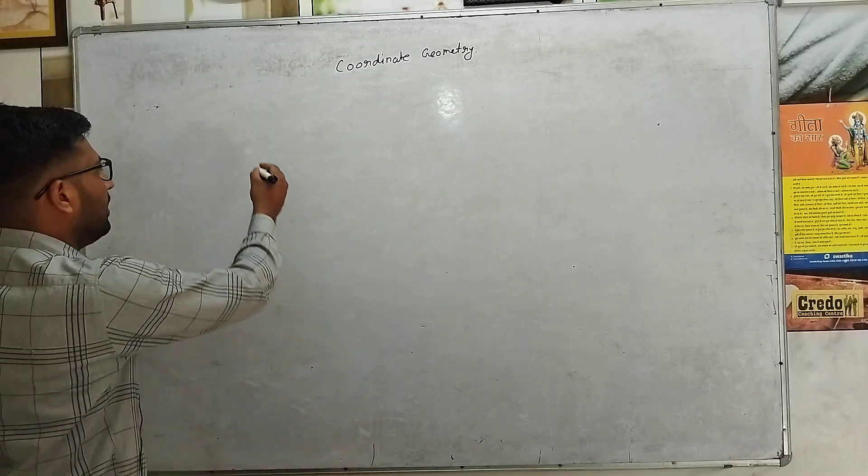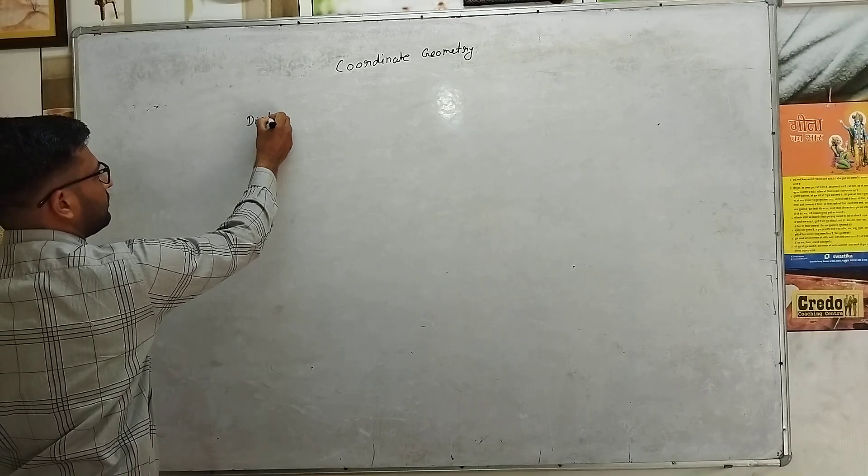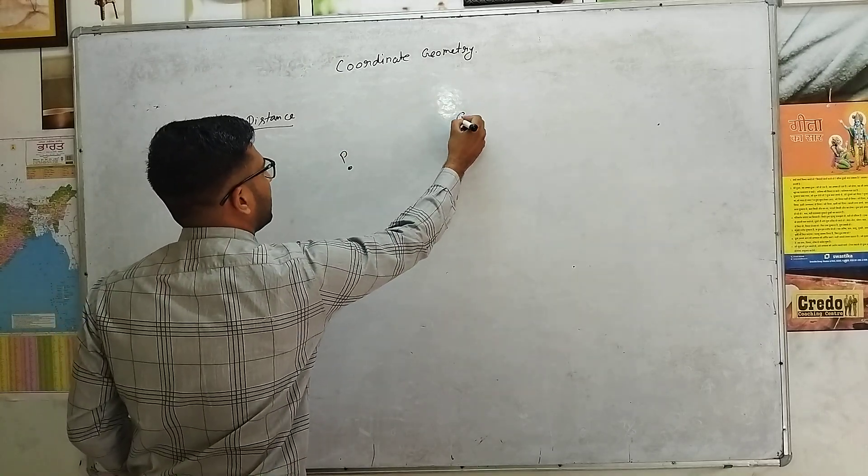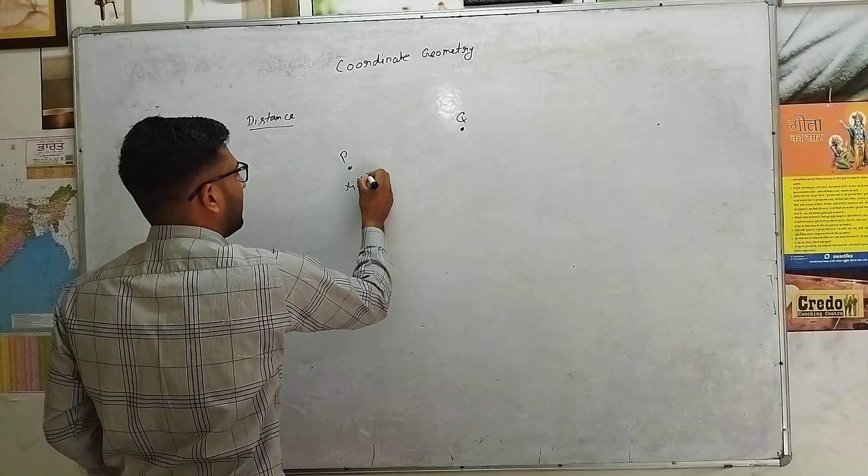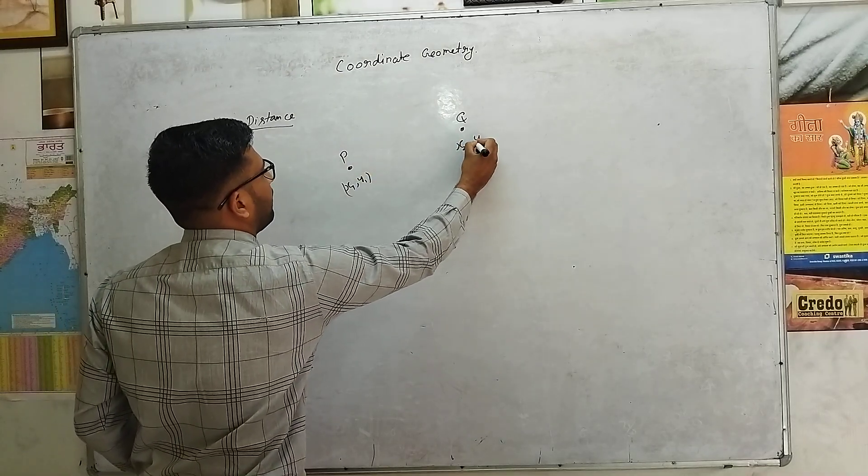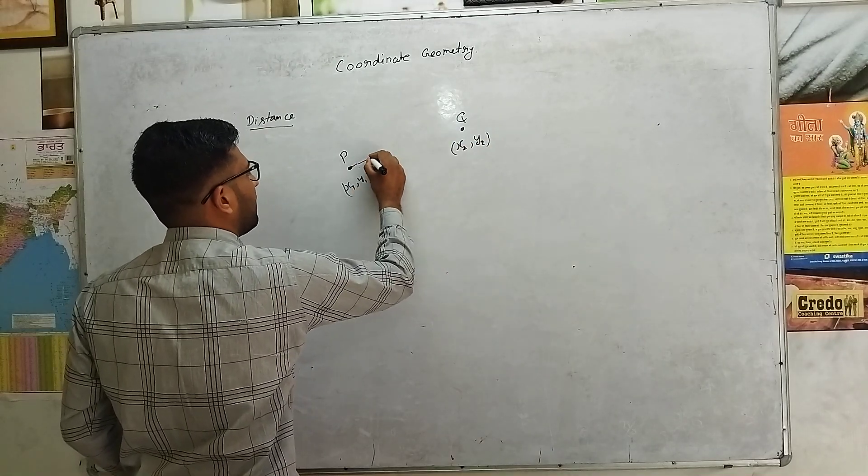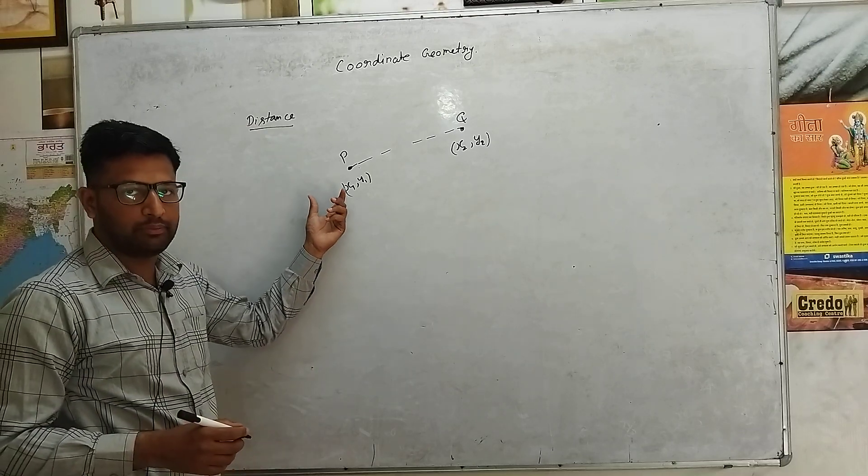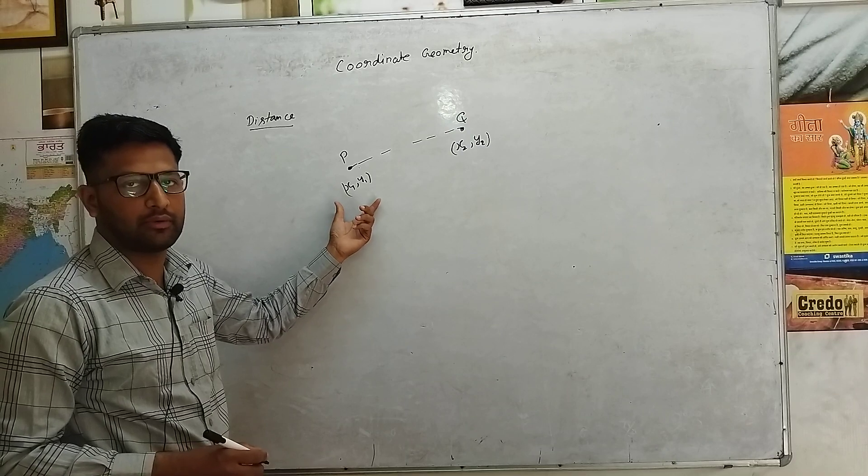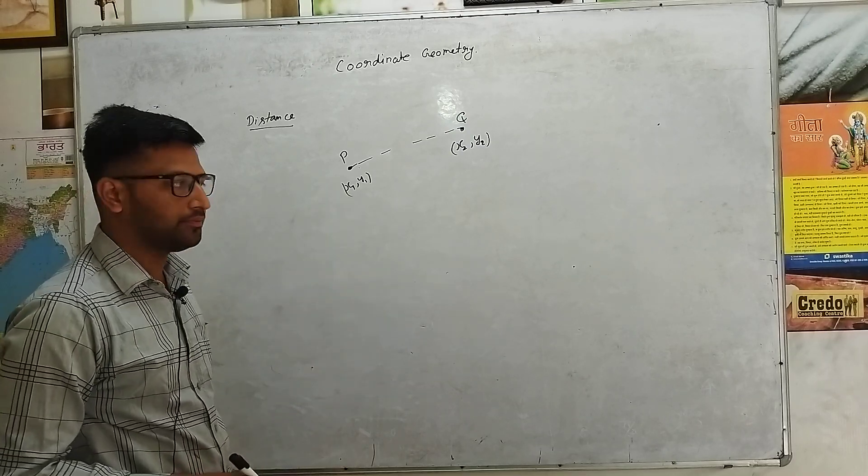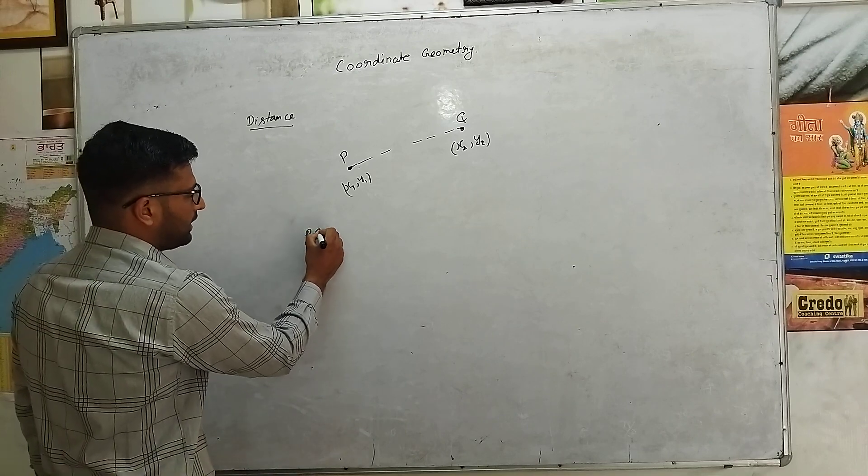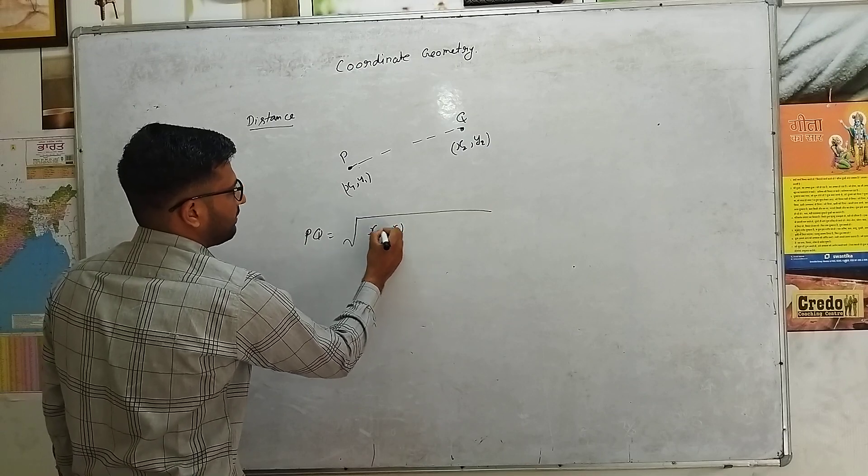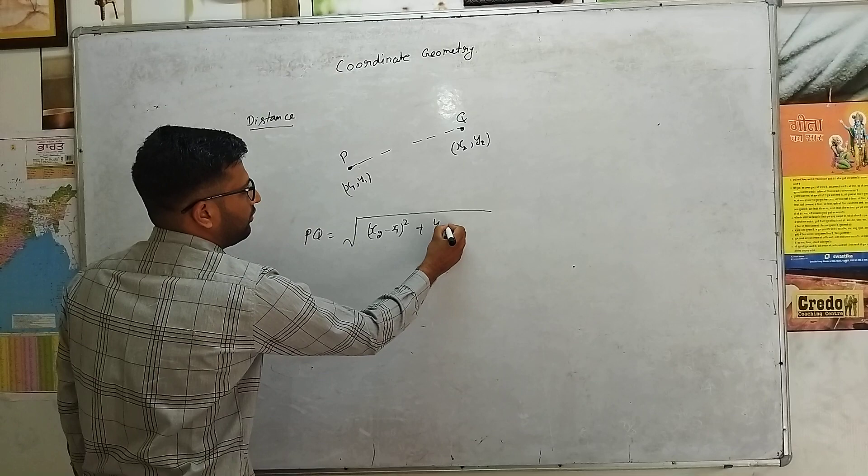This is the distance formula which is very important. If there are two points like P and Q, then we will find out the distance formula. PQ is equal to square root of x2 minus x1 square plus y2 minus y1 square.